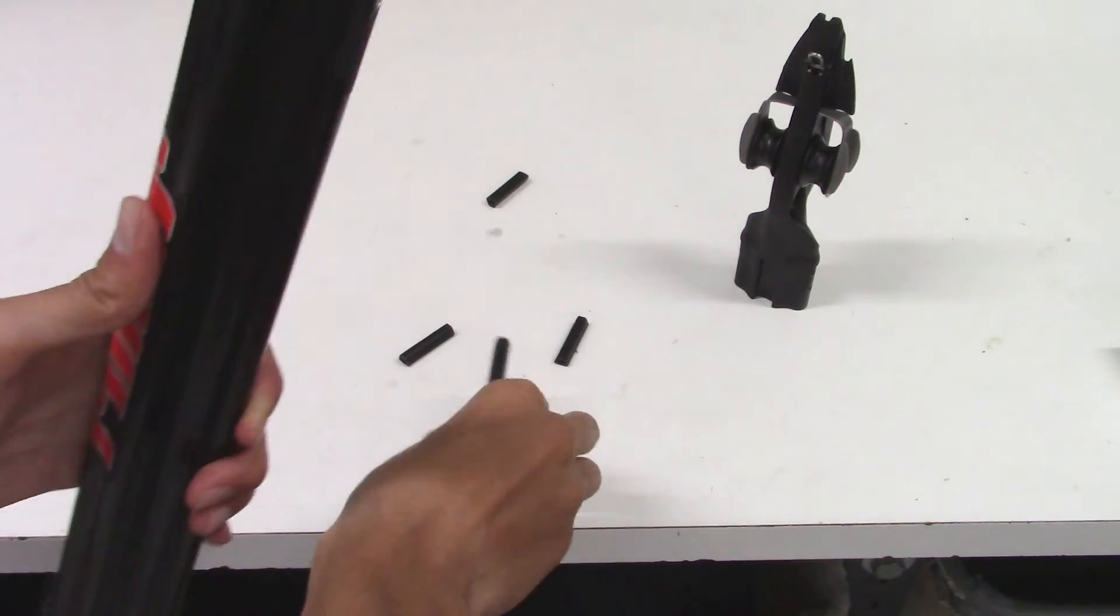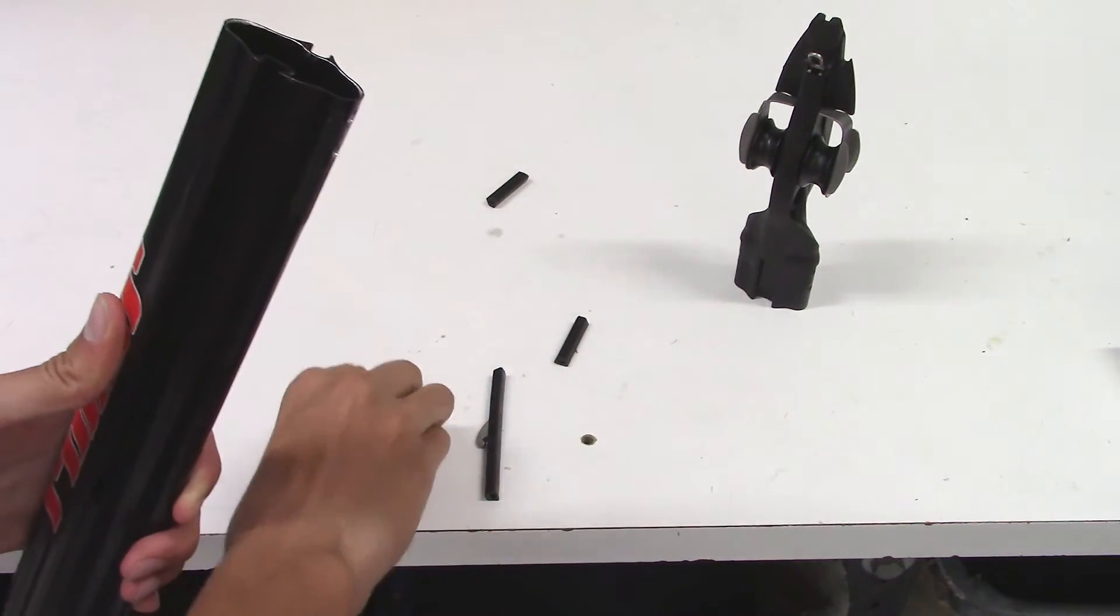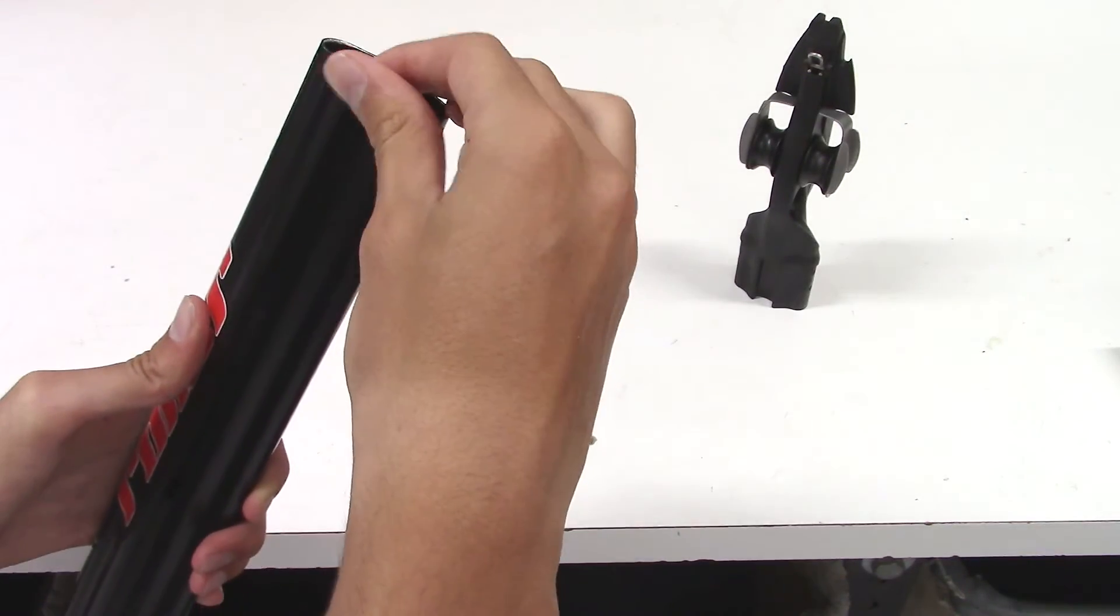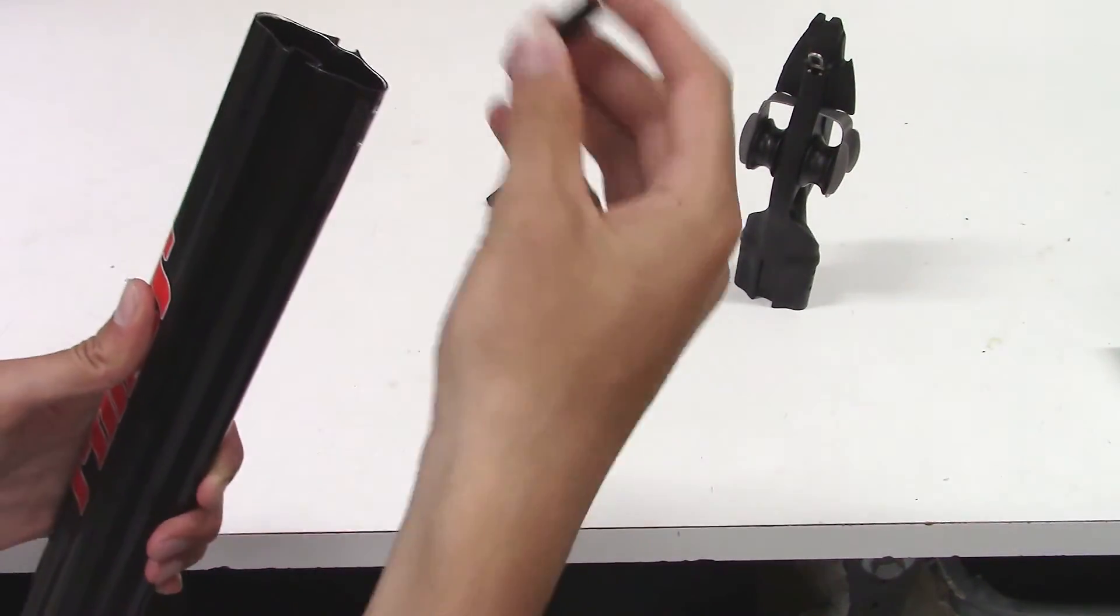Once you are happy with the position of the loading tabs, you can then reinstall the muzzle by reversing the disassembly steps.